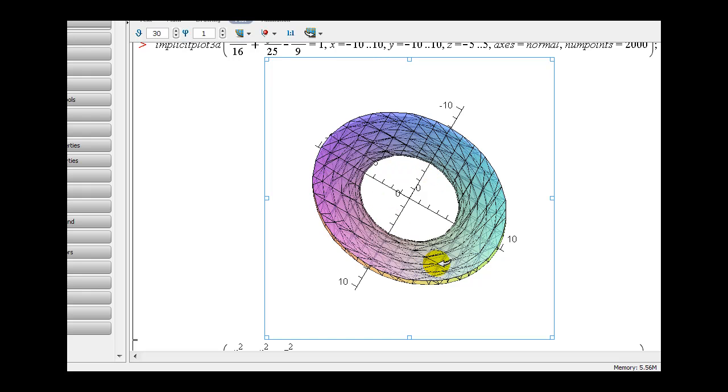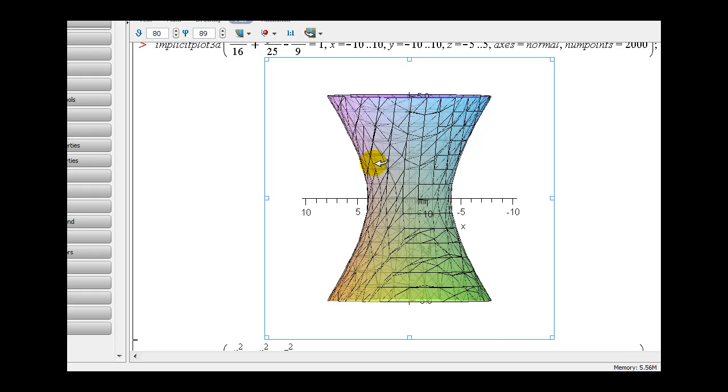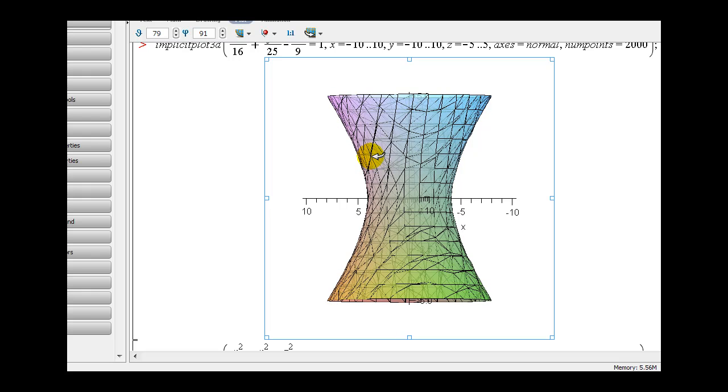If we take a look at just the xz plane, it would look like this. Again you can see the hyperbola opening left and right.